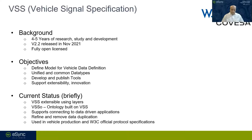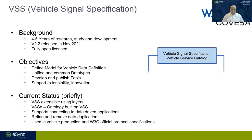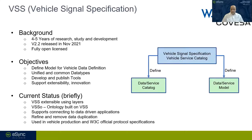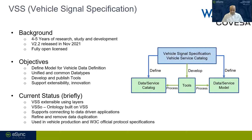A little about the Vehicle Signal Specification (VSS). It represents four to five years of research; the current version is 2.2 and is fully open license. It defines a model for vehicle data definition, unifies common data types, develops and publishes tools, and supports extensibility and innovation. Currently, VSS is extensible using layers, an ontology map has been built, it supports connecting data applications, and it has found itself in production vehicles and as a protocol specification in W3C.